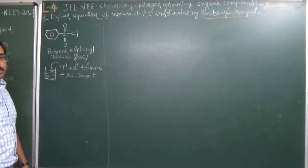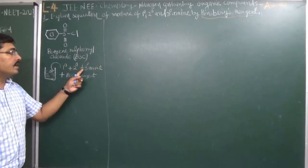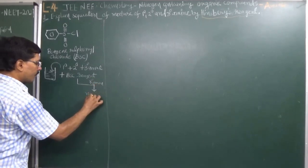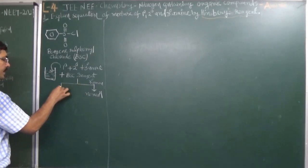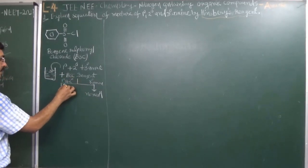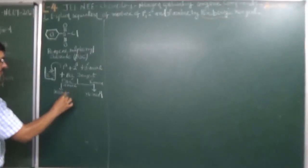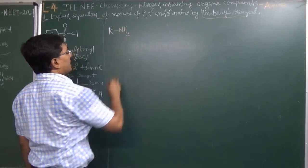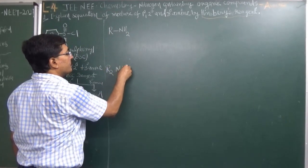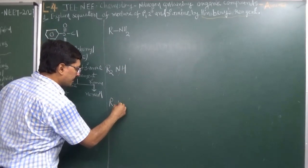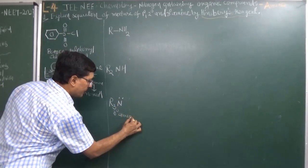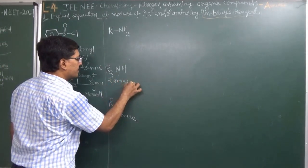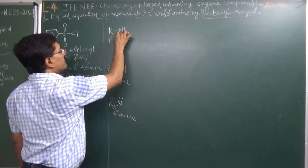When we add benzene sulfonyl chloride, it is observed that Primary and Secondary Amines will react, while Tertiary Amine has no reaction. The formula of Primary Amine is RNH₂, Secondary Amine is R₂NH, and Tertiary Amine is R₃N. Tertiary Amine has no hydrogen on nitrogen, so it cannot react with benzene sulfonyl chloride. Secondary amine has one hydrogen atom and primary amine has two hydrogen atoms on nitrogen.